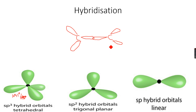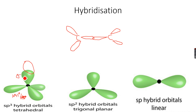Sigma bonds are formed by the linear, or head-on, overlapping of orbitals. For example, when you look at a hydrogen orbital, you can see that they're overlapping head-on, and that's why we have a sigma bond. Similarly, in this case, they're overlapping head-on, so we have a sigma bond here as well.